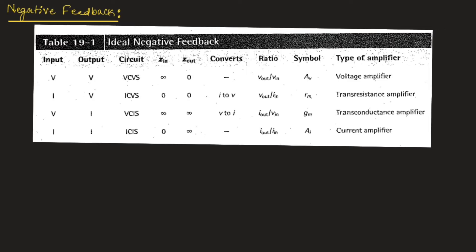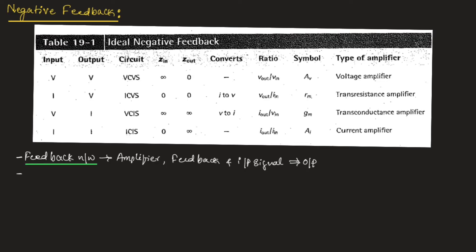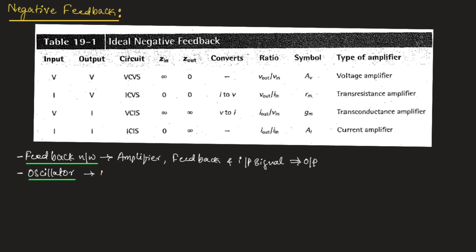Generally, in a feedback network, it consists of an amplifier, feedback stage, and also the input signal to obtain the output. If we consider a feedback network compared with an oscillator, the oscillator network consists of an amplifier stage and feedback stage, but no input is connected. This is the difference between a feedback network and an oscillator.